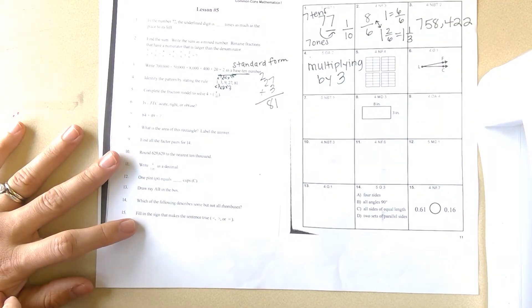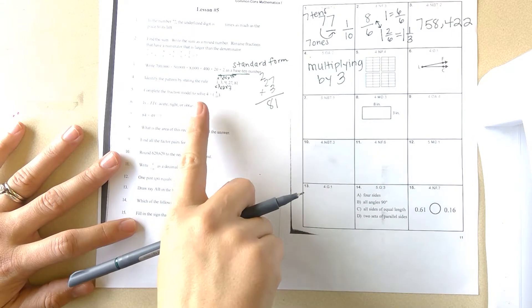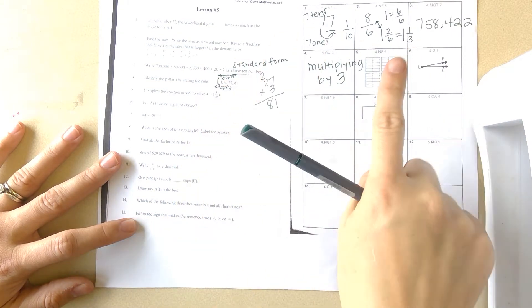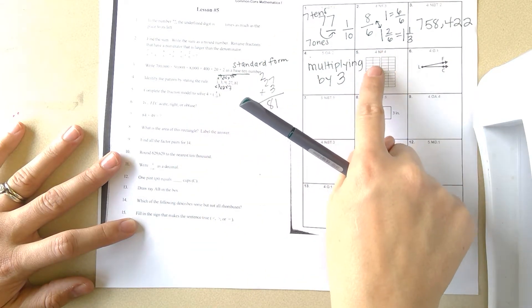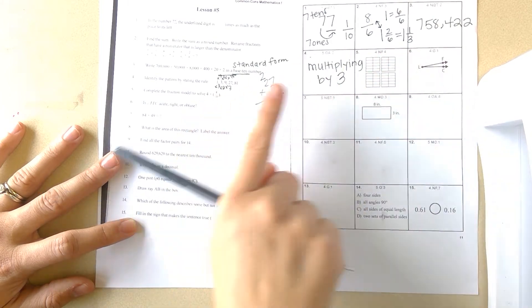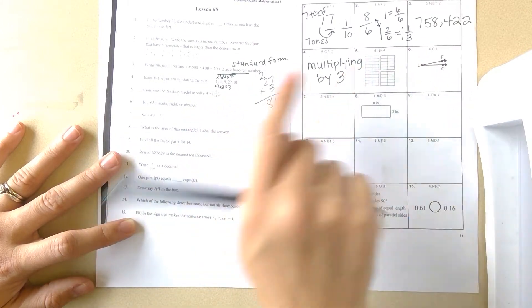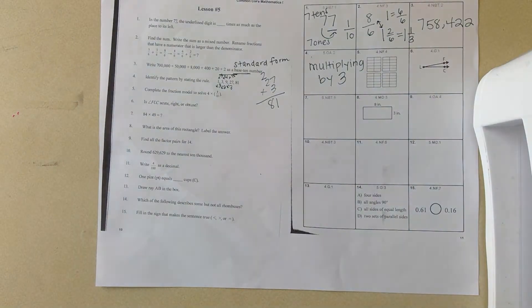Next, complete the fraction model to show four times eight-tenths. They have four-tenths. Here's a whole cut into tenths, here's a whole cut into tenths, here's a whole cut into tenths, and here's a whole cut into tenths. I'm actually going to get my yellow.